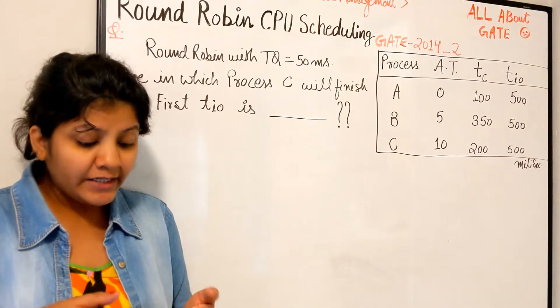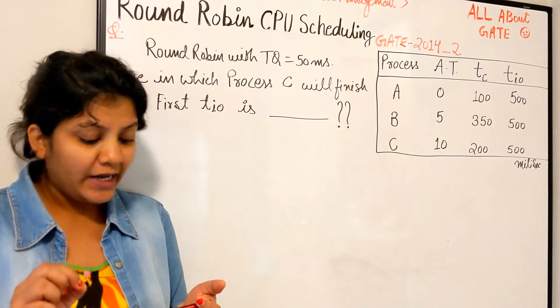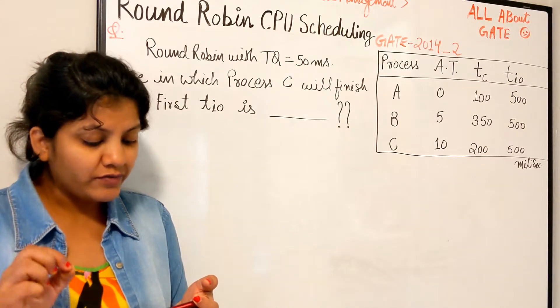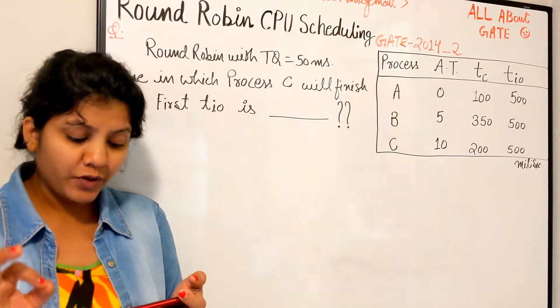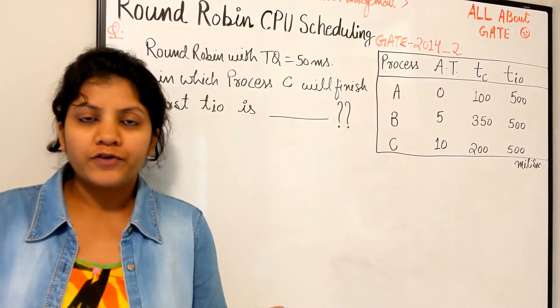All right, it is assumed that the computer where the processes execute has sufficient number of IO devices, and the OS of the computer assigns different IO devices to each process every time. Correct, so there is no clash of resources.